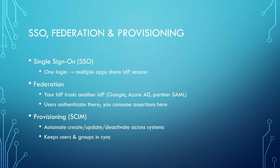SSO means one login across multiple apps that all trust the same IDP session. Federation is when your IDP trusts another IDP — Google, Azure AD, or a partner SAML provider — users authenticate there and you consume assertions here. Provisioning is the account lifecycle: with SCIM and your IAM, you can automatically create, update, and deactivate users and groups across systems.